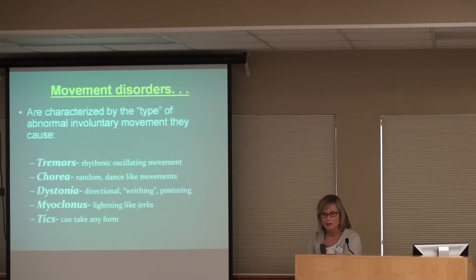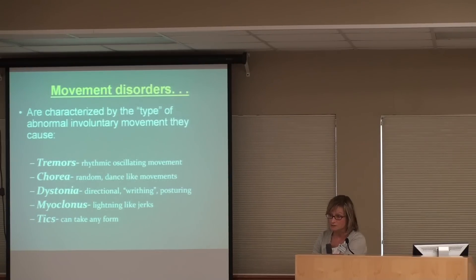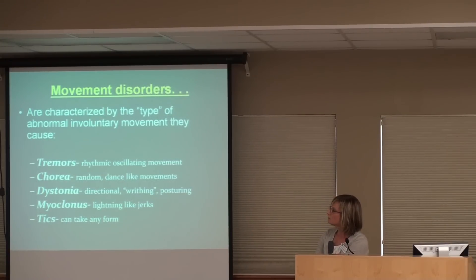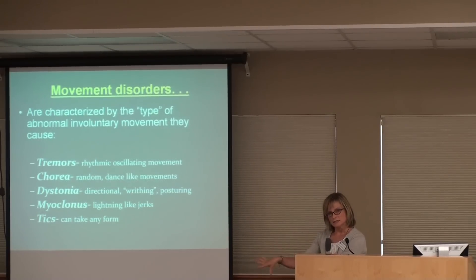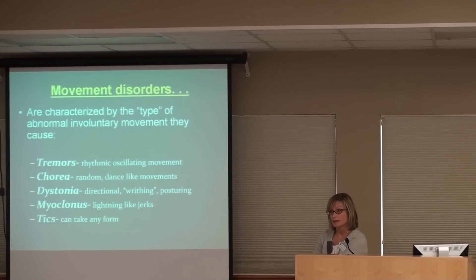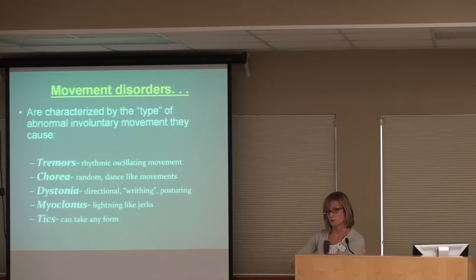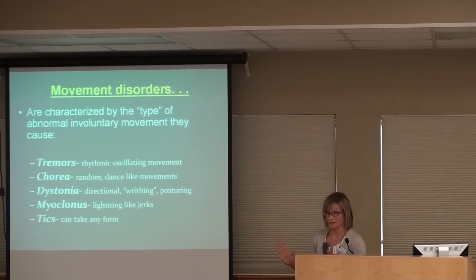Some forms of chorea are caused by infections, like Sydenham's chorea, which is associated with strep infections — not common anymore. Dystonia is a term that refers to an abnormal movement which is more of a directional movement, and we're going to talk in detail about a few different forms of dystonia today that can affect adults and how they're treated. Myoclonus refers to lightning-like jerks of a muscle — quick, involuntary muscle jerks that have many different causes.